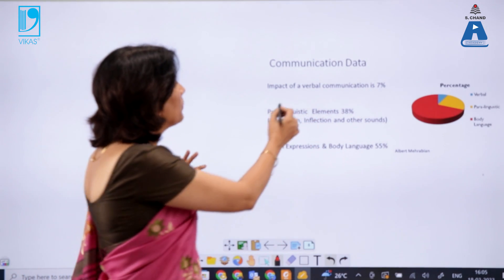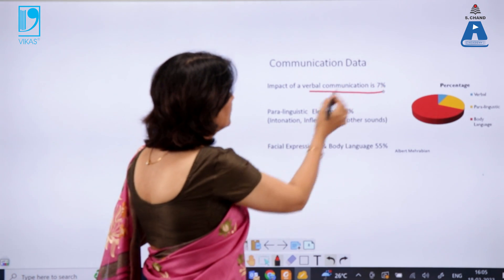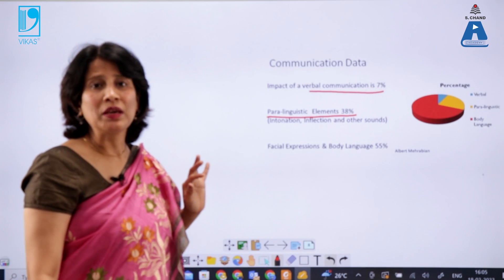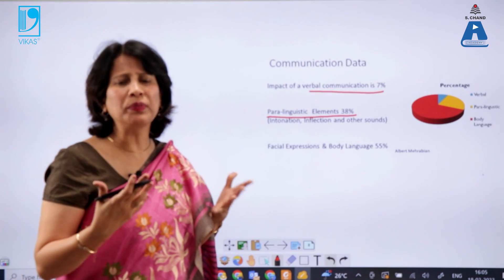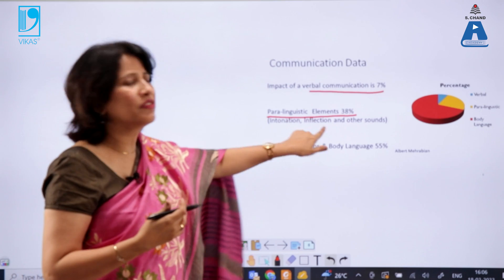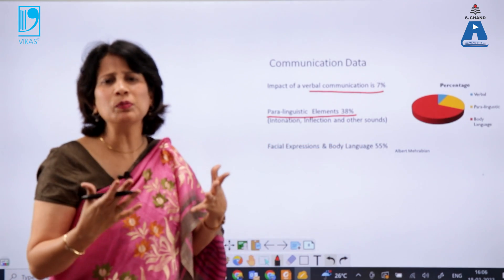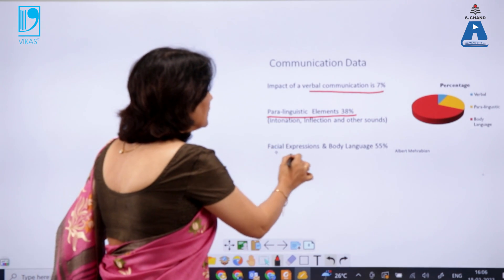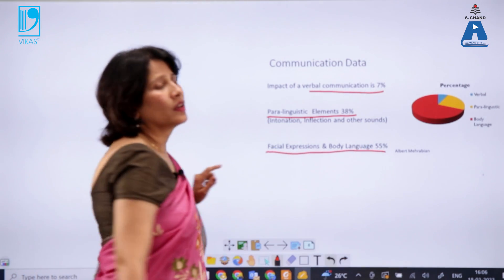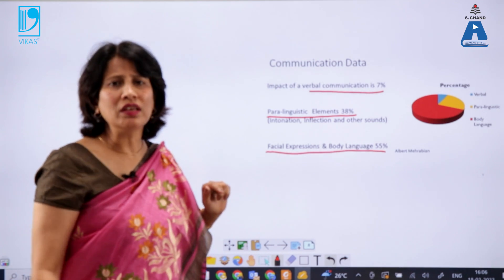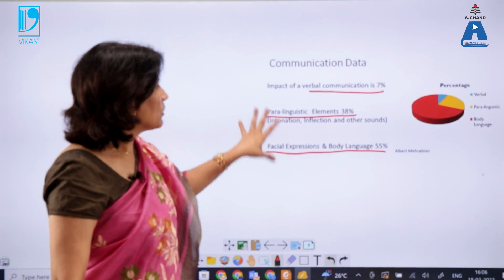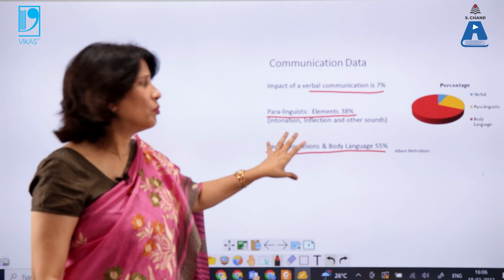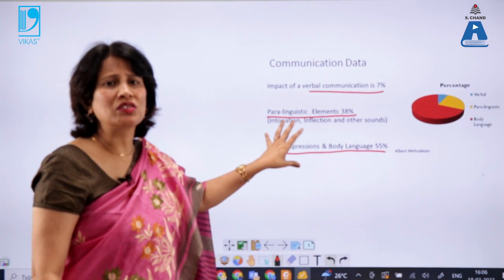This is the famous communication data: the impact of verbal communication is 7%, paralinguistic elements account for 38% — paralinguistic elements include tone, pitch, intonation, inflection, and other sounds related to the way we speak — and facial expressions and body language account for 55% of impact on the receiver. In totality, that is a huge percentage, showing how much importance non-verbal communication holds.